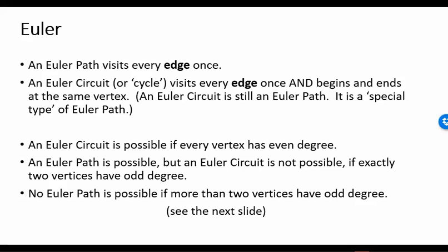When is this possible? An Euler circuit is possible if every vertex has an even degree. An Euler path is possible, but an Euler circuit is not, if exactly two vertices have odd degree. And we have no Euler path possible if more than two vertices have odd degree.